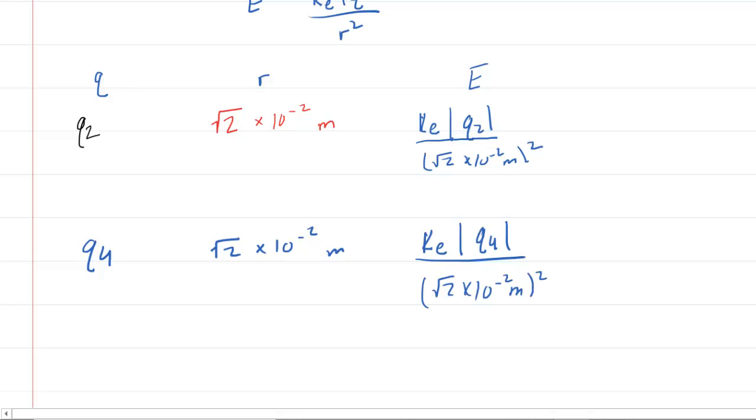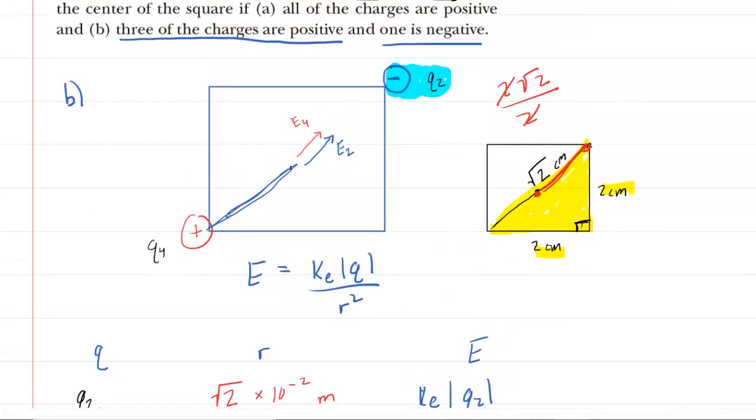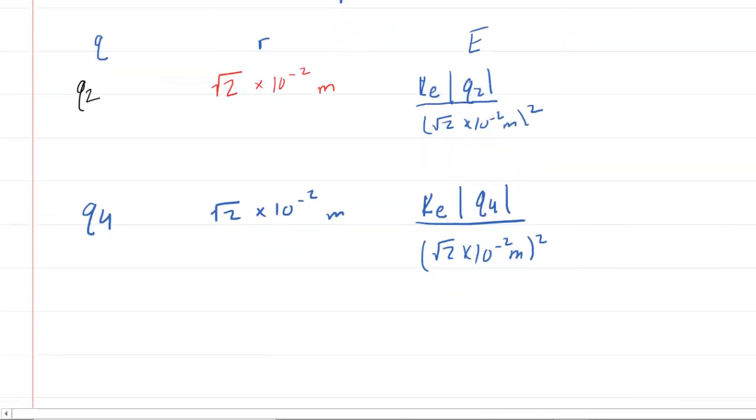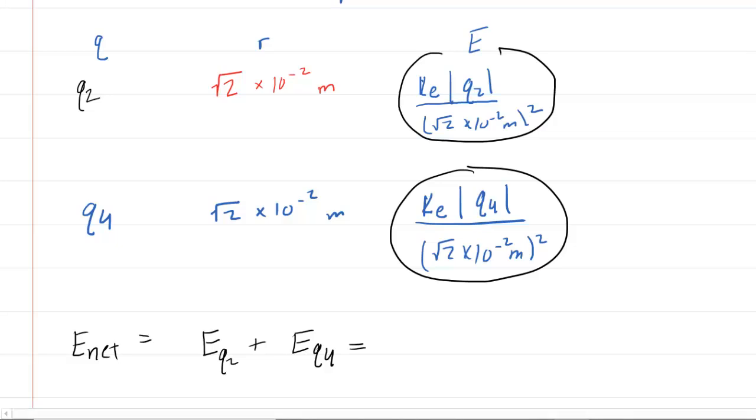Now what's really nice here, if you go back to the picture, is that the electric fields are pointing in the exact same direction. It's not as if one is pointing one way and the other is pointing in another way. If it were that way, we'd have to start worrying about X and Y components. But here, they point in the same direction. So this means that the net electric field magnitude is simply the magnitude of the electric field provided by Q2 plus the magnitude of the electric field provided by Q4. And we've already come up with those expressions. We have the electric field for Q2 right here and that for Q4 right there. So let's fill them in.